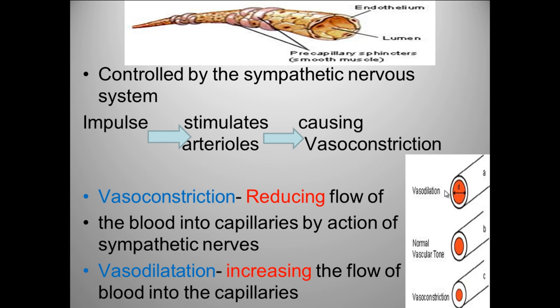Looking at the diagrams here, under vasodilation the lumen size is bigger, and under vasoconstriction it shows it being much smaller, as the smooth muscle has contracted. We can think of vasoconstriction happening to the arterioles surrounding the kidney or around the abdomen. Vasodilation would occur to the blood vessels that supply the skeletal muscles and also the blood vessels that supply the skin, which will enable you to cool down.